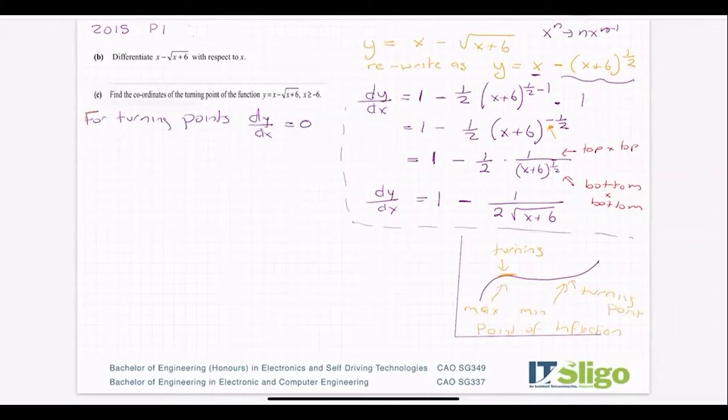So what you do is you basically take what you just found for dy/dx and you let it equal to zero. And what you do then is you solve for x, and in that way you will find your x coordinate of your turning point.